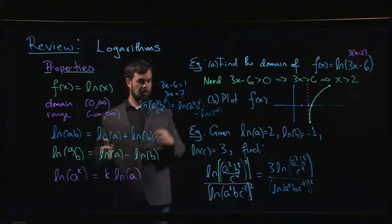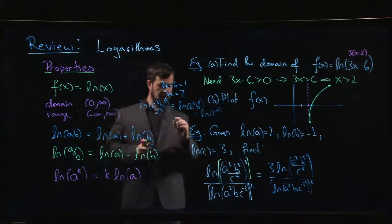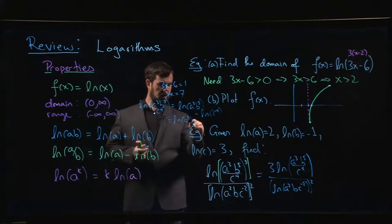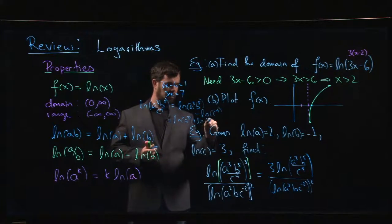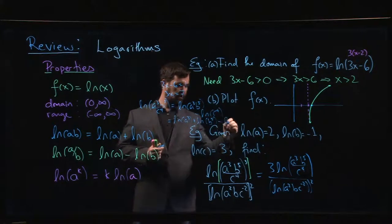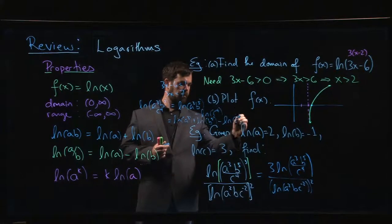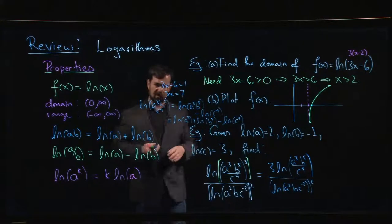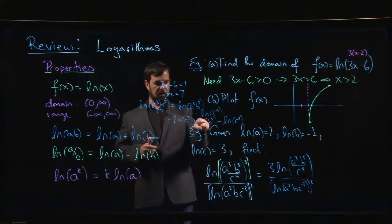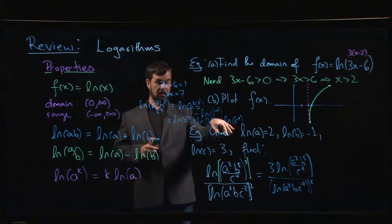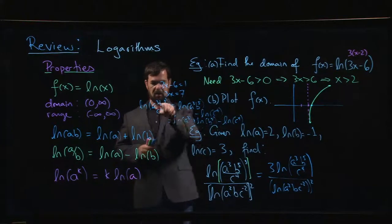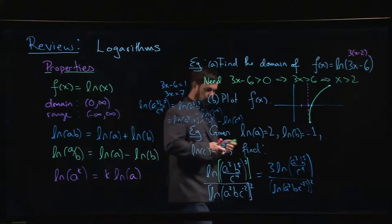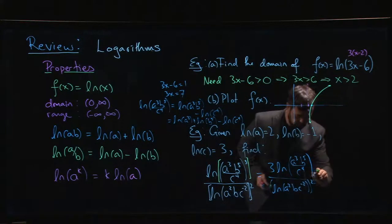And then you could apply the sum rule to that first term. You could write it as log of a cubed plus the log of b to the 5 minus the log of c to the 4. Once you get the hang of this, you'll realize that it is always going to be the case that terms in the numerator just come with plus signs, terms in the denominator come with minus signs when you have things factored like this.